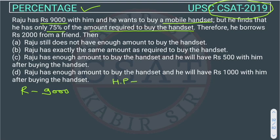Let's assume the price of the handset is X rupees. So how much is Raju having? Raju is having only 75% of that. So 75% of X will be equal to how much Raju is having — 9,000.